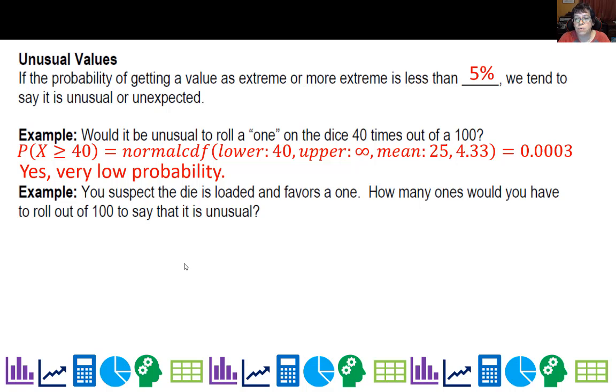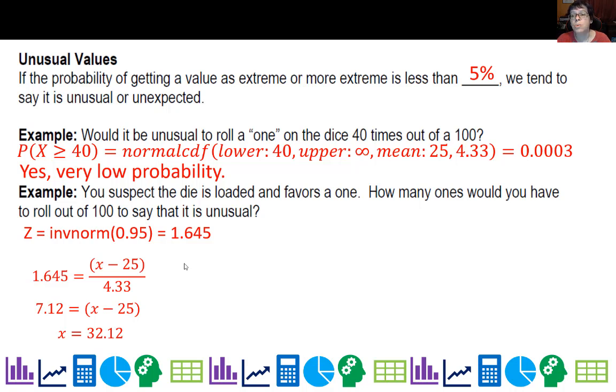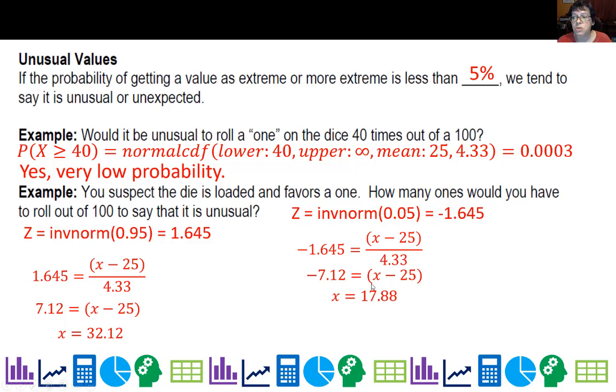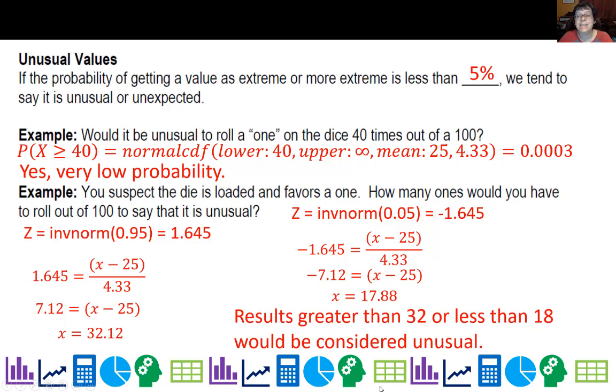If the die favors a one, how many ones would you have to roll out of 100 to say it is unusual? The z-score for 95% below and 5% above is 1.645. Solving for x gives 32.12, so anything higher than 32 would imply the die is loaded. For lower values, anything 17 and lower would be unusual as well.